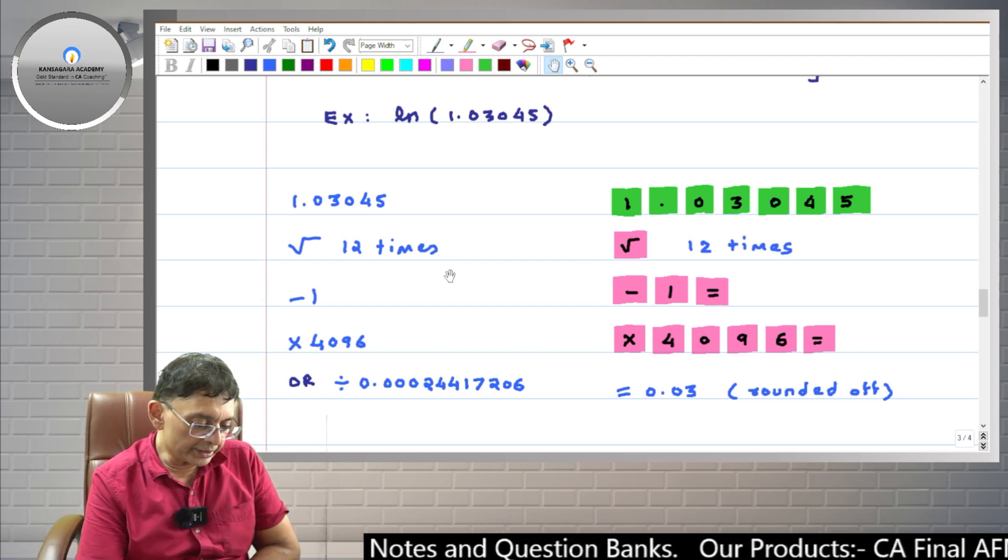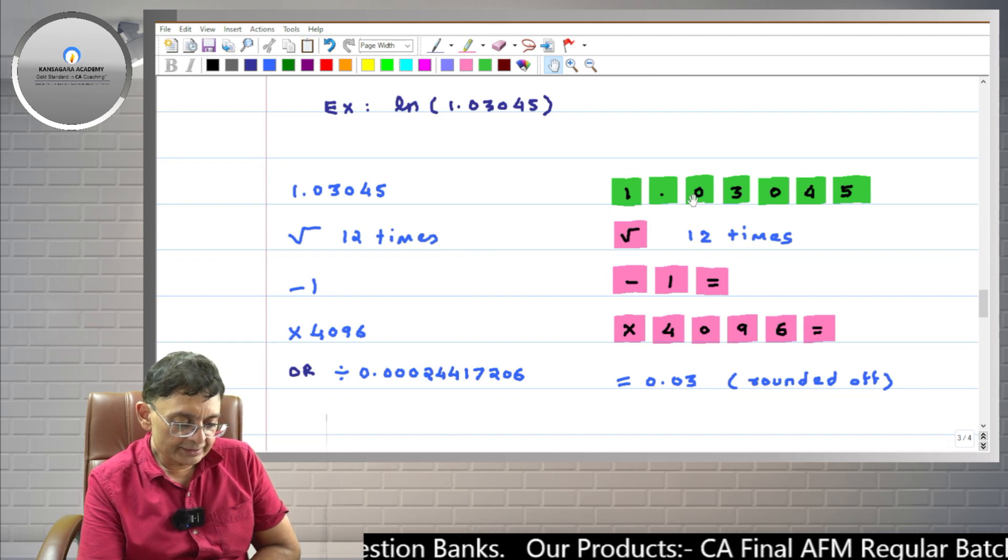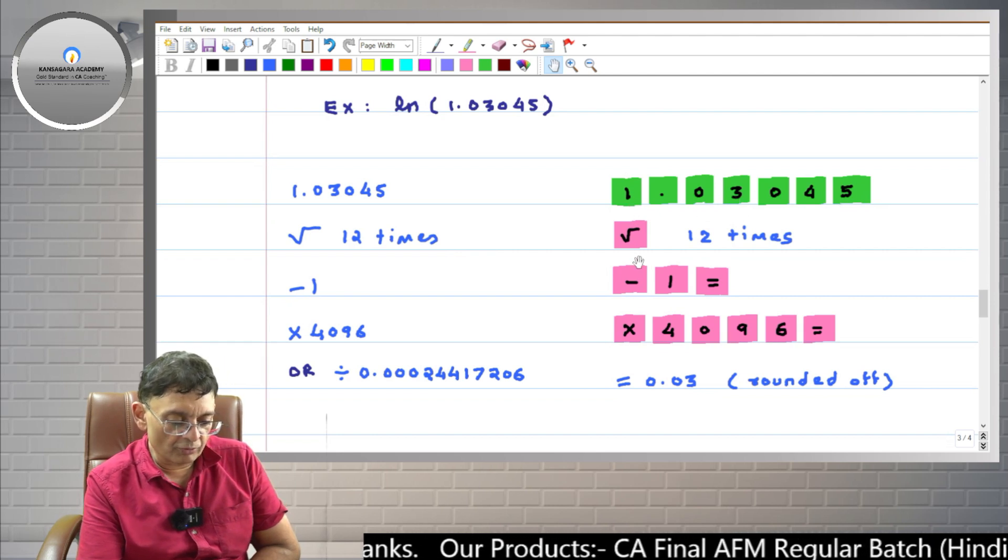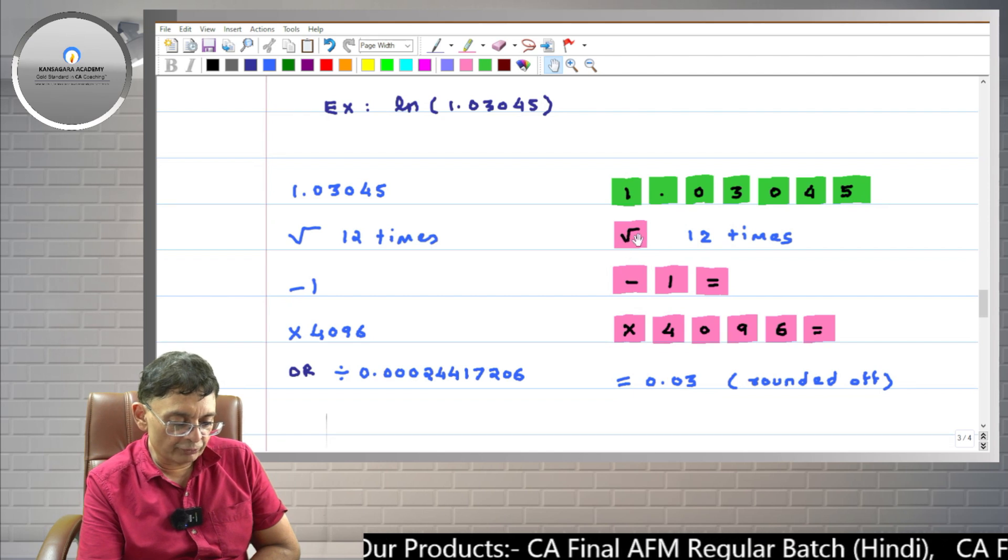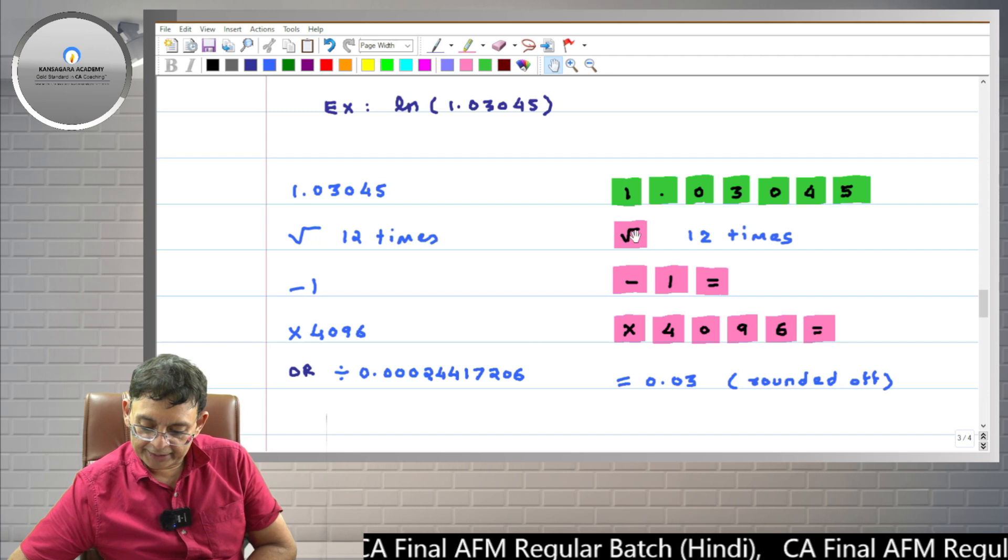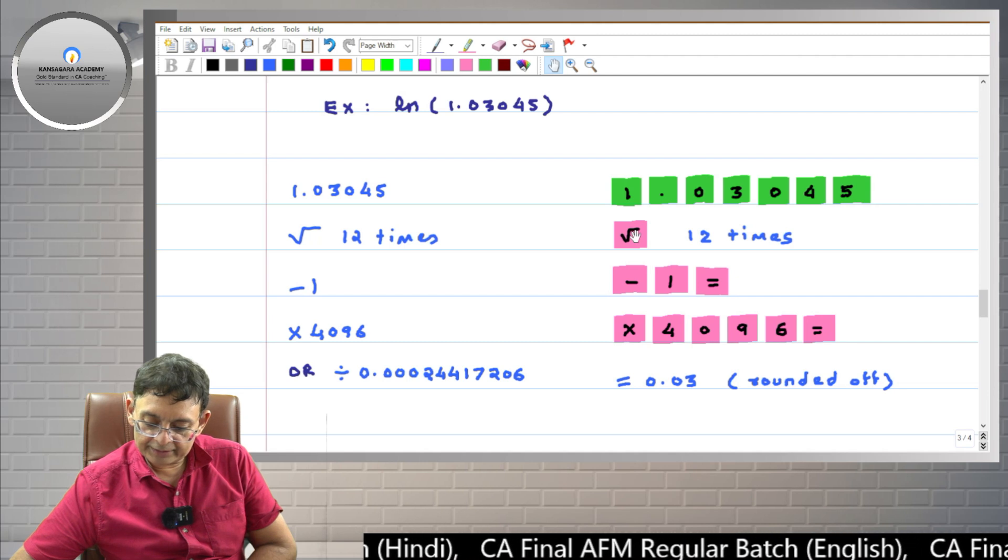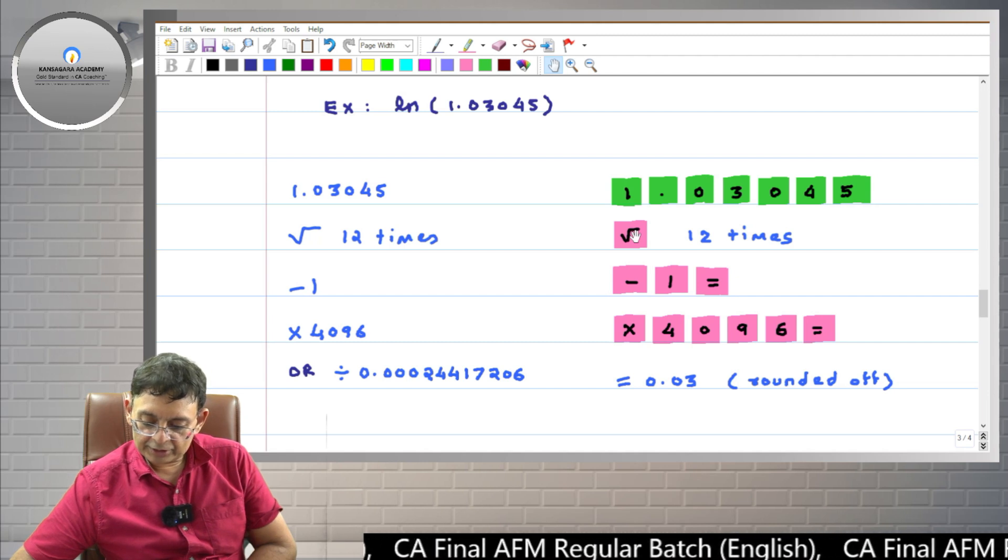Then friends, we have to take root 12 times. Here is whatever keys you have to press that we have shown in the colorful boxes. So it will be easier for you to understand. So you press the root key 12 times. So I am doing that 1, 2, 3, 4, 5, 6, 7, 8, 9, 10, 11, 12.